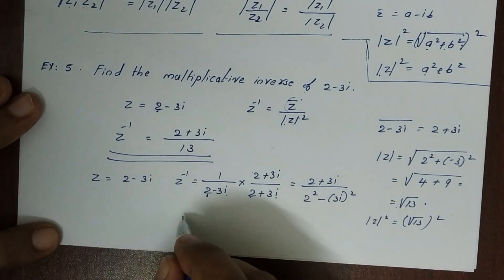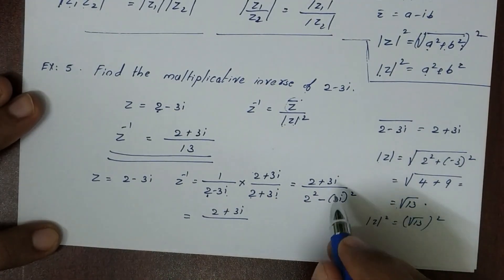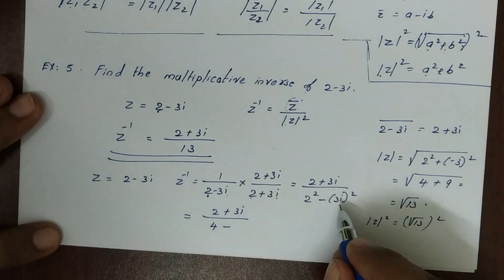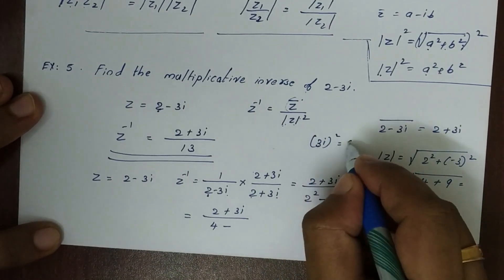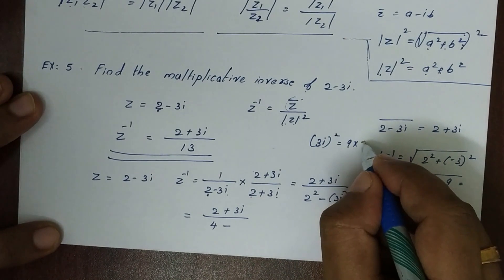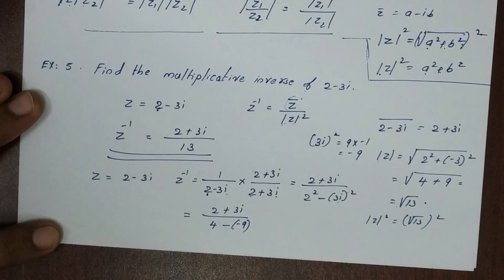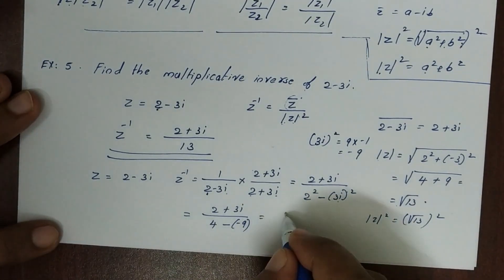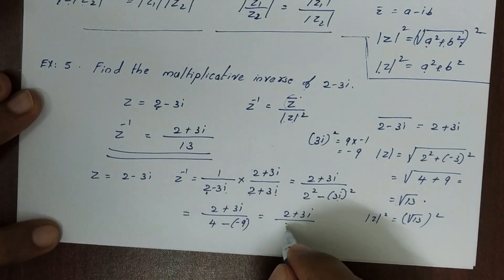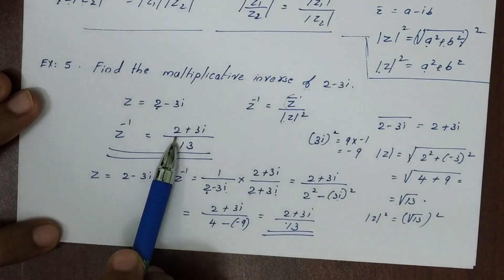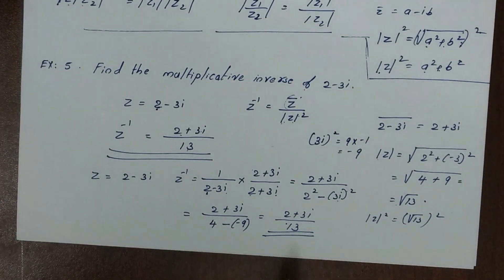So we have 2² minus (3i)², which gives 4 minus 9i². Since i² equals -1, that is minus 9 times -1, giving +9. So the denominator becomes 4 plus 9, which is 13. Therefore z inverse equals 2+3i divided by 13, confirming our earlier result.